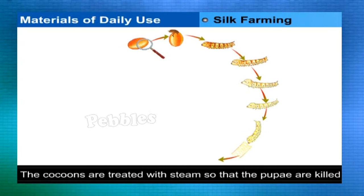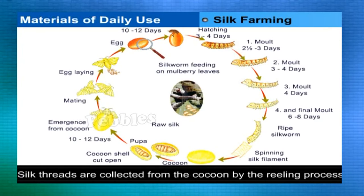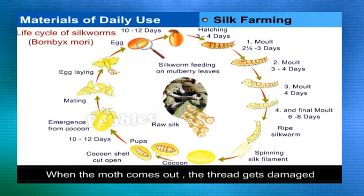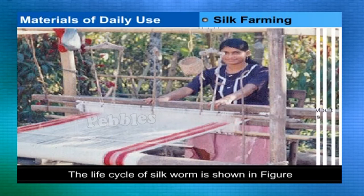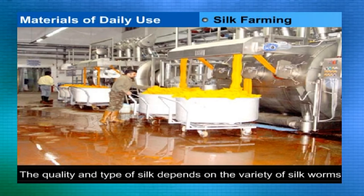The cocoons are treated with steam so that the pupae are killed. Silk threads formed by the cocoon are collected by a process called reeling, which is done by hand. If the cocoons are not steamed, the pupae develop into moths; when the moth comes out, the thread gets damaged. The life cycle of the silkworm is shown in the figure.